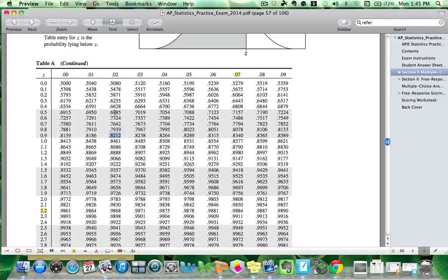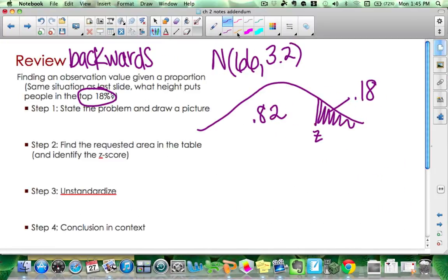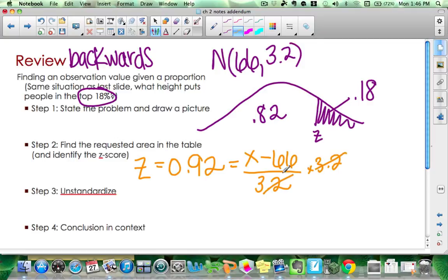And I'm going to do steps 2 and 3 together. That's going to equal X minus the mean divided by the standard deviation. In step 3, I need to solve. You do not need to show the algebra as long as you can do the algebra. So I'm taking 0.92 times 3.2, and that gives me 2.944 is equal to X minus 66. I'm going to add 66 to both sides. Again, you do not need to show this.